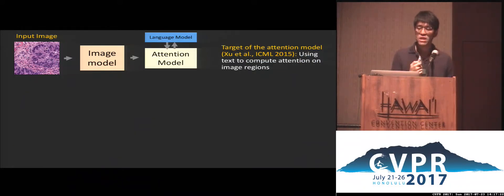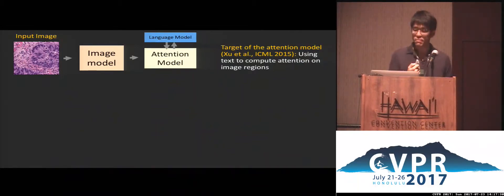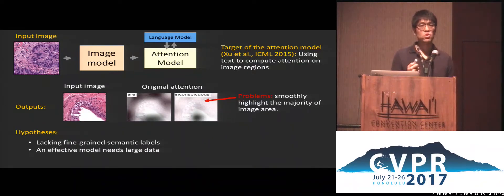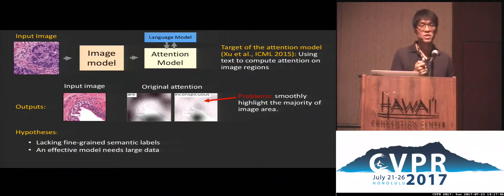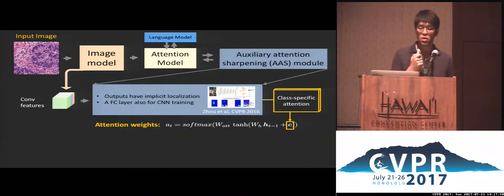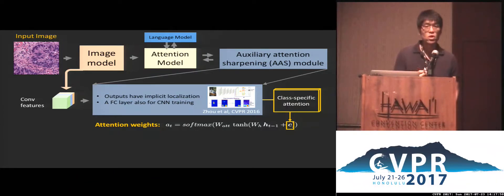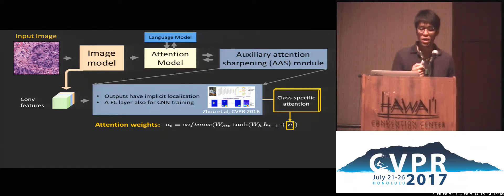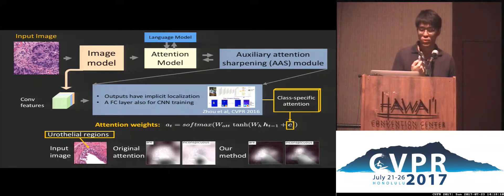To compute the attention, the attention model uses information from both text and image to compute attention on image regions. Using the original attention models, we found that attention maps often mostly highlight the majority of image areas. We hypothesize this is because of two reasons: lacking fine-grained semantic labels to guide semantic feature maps, and training effective attention models requires large data. We introduced an auxiliary attention sharpening module to help. We use the implicit localization property of global average pooling proposed by Zhou et al. to generate embeddings we call class-specific attention. We inject such information into the attention computation during text generation. Our attention can more accurately attend on the lesion regions used by doctors to diagnose.